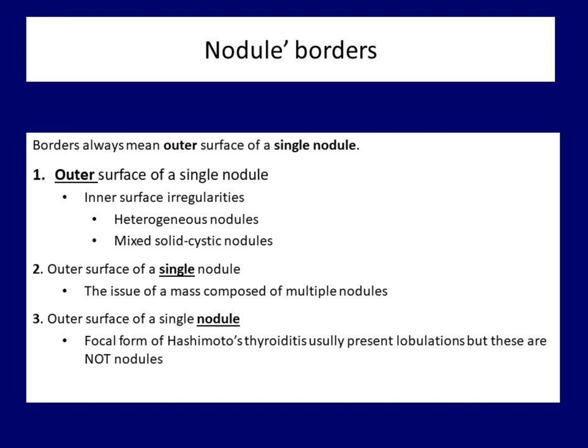As a rule of thumb, borders rely on the external surface of a single nodule — external, single, and nodule. External or outer because inner surface irregularities should not be taken into account. Single, because surface irregularity caused by the presence of multiple nodules next to each other does not belong to irregular borders. And finally, lesions of thyroiditis usually present with irregular borders, but these discrete lesions are not pathological nodules.